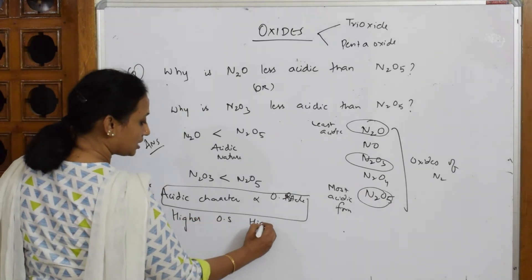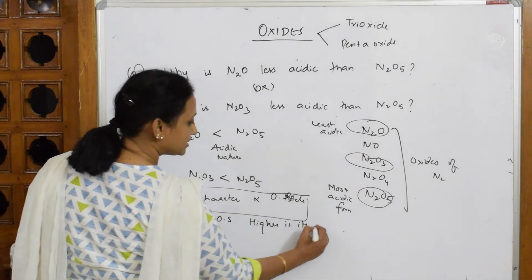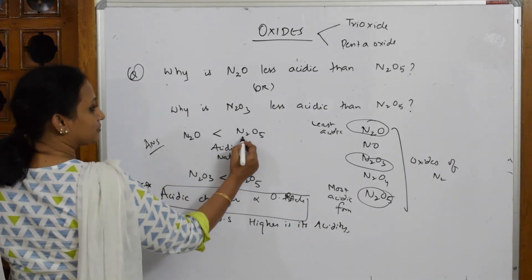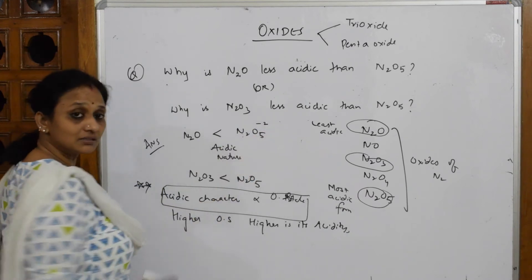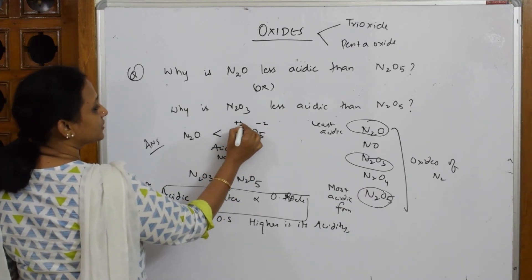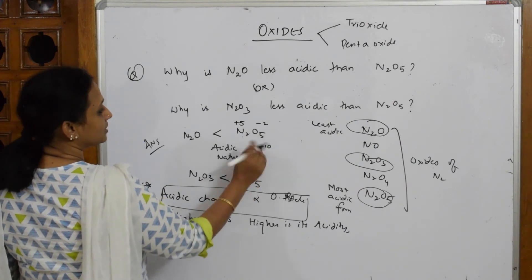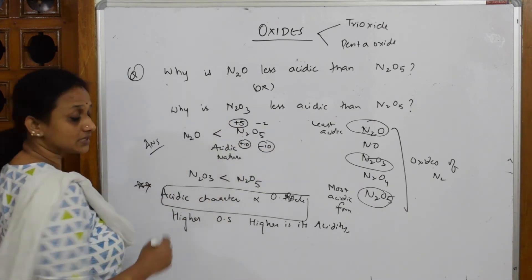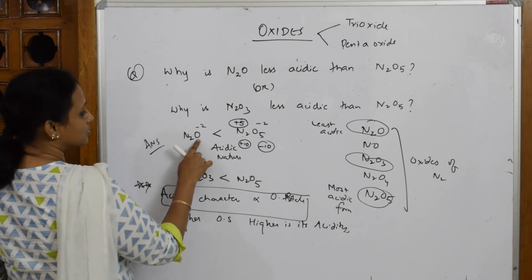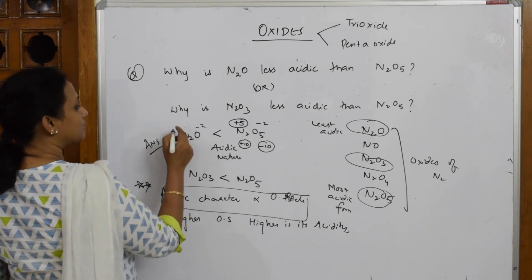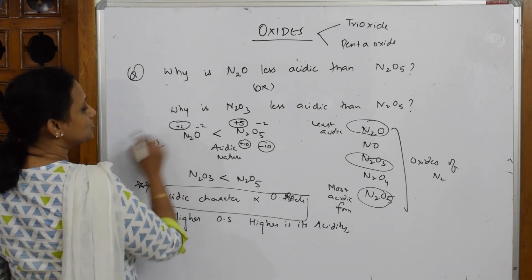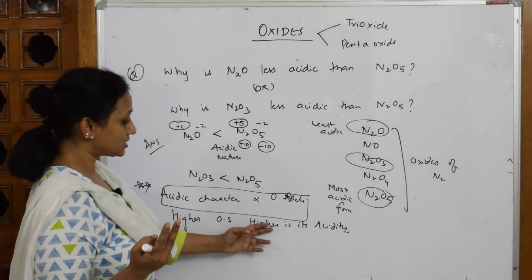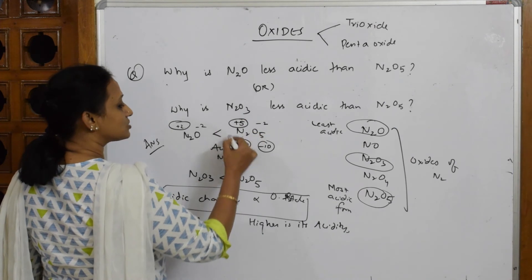Let's come back and see. In this case, what is oxidation state of nitrogen? N2O5: oxygen is minus 2, so 5 times 2 is minus 10. Nitrogen is plus 10 total, so oxidation state is plus 5. In N2O, oxidation state is plus 1 or plus 2. Which is more acidic? Higher oxidation state is highly acidic, so N2O5 with plus 5 is most acidic.